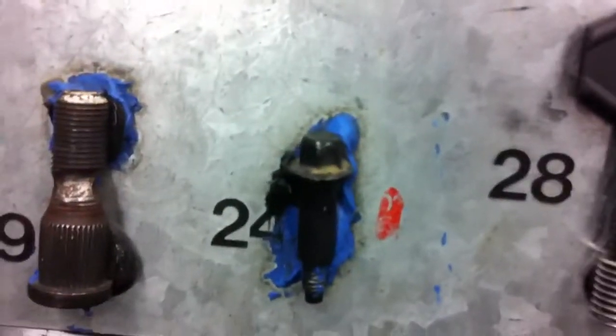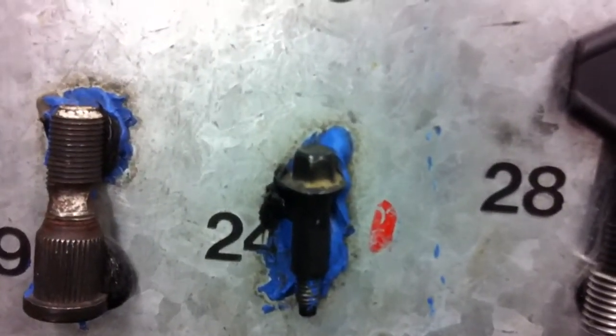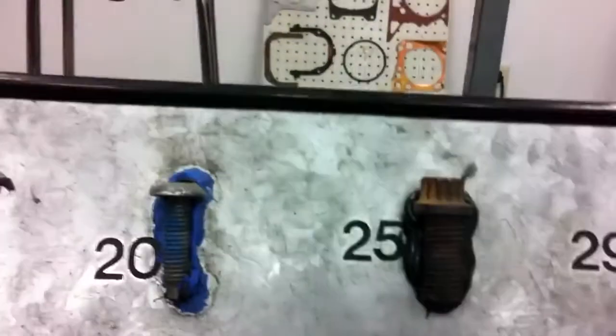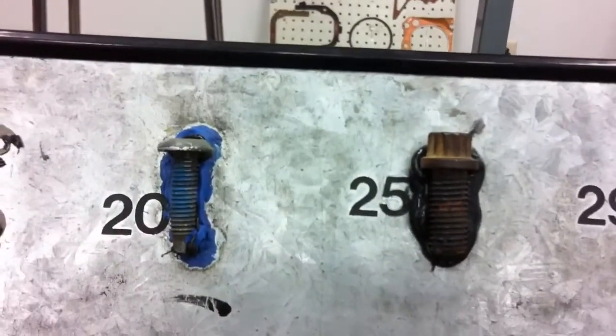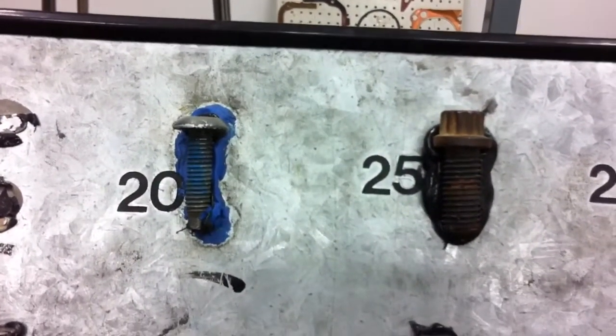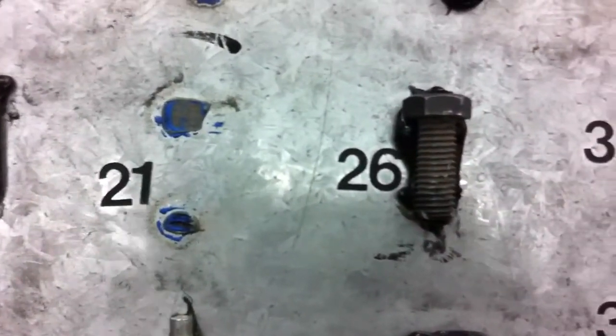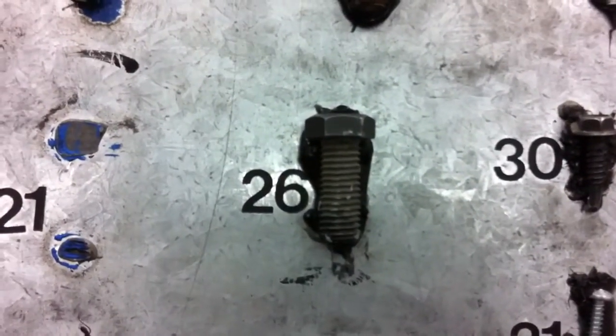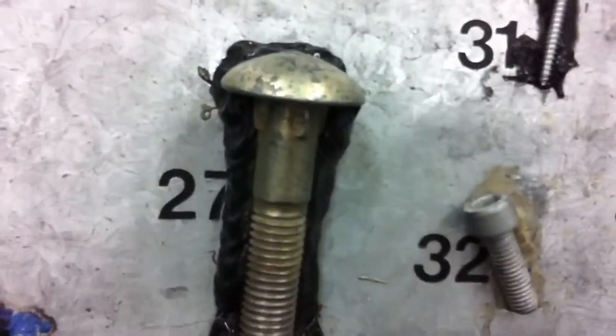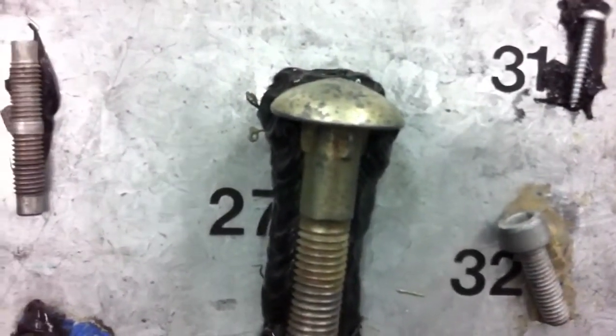Number twenty-four is a hex flange collar bolt. Number twenty-five is a 12-point flange. Number twenty-six is a hex head. Number twenty-seven is a carriage bolt.